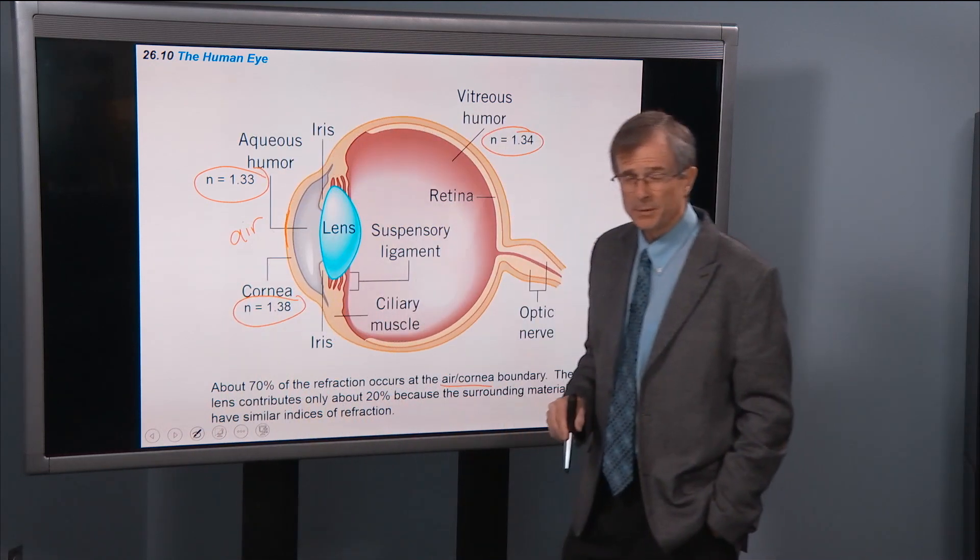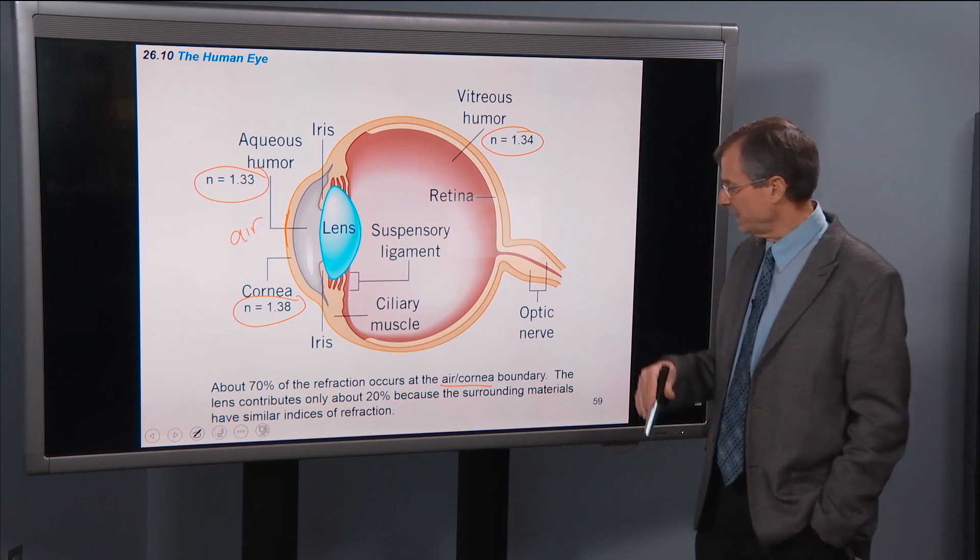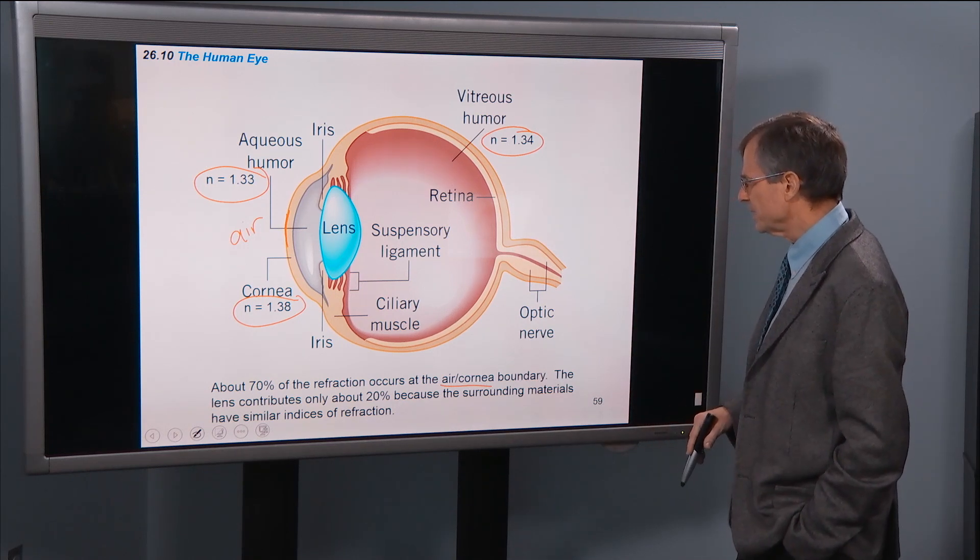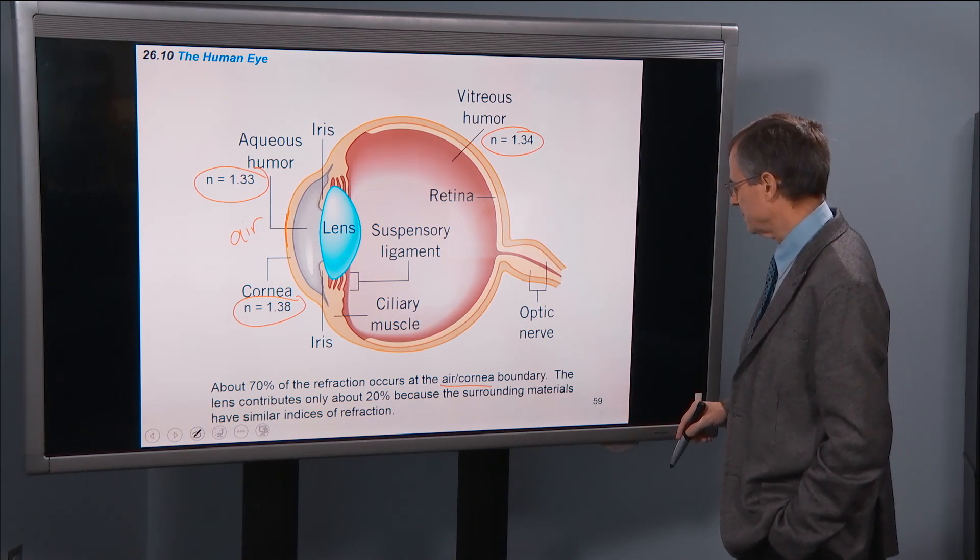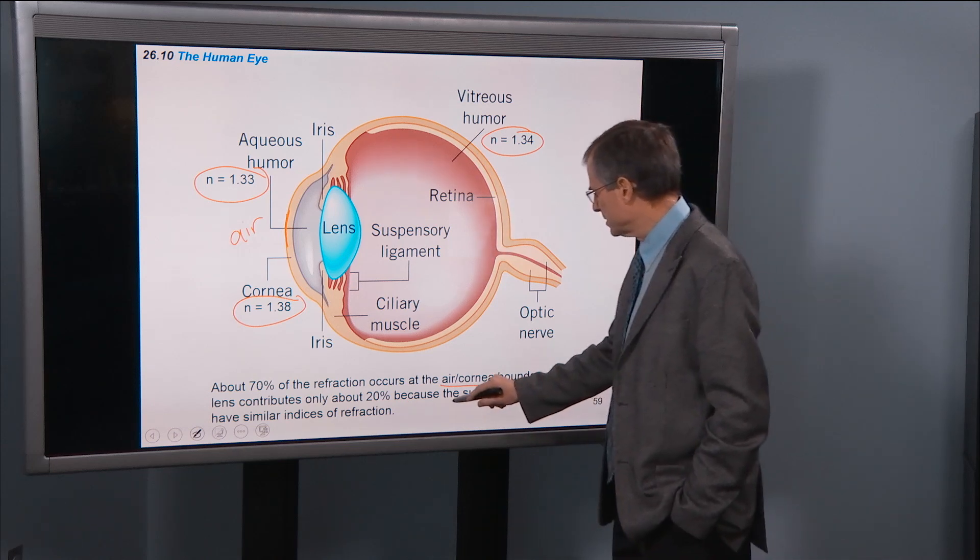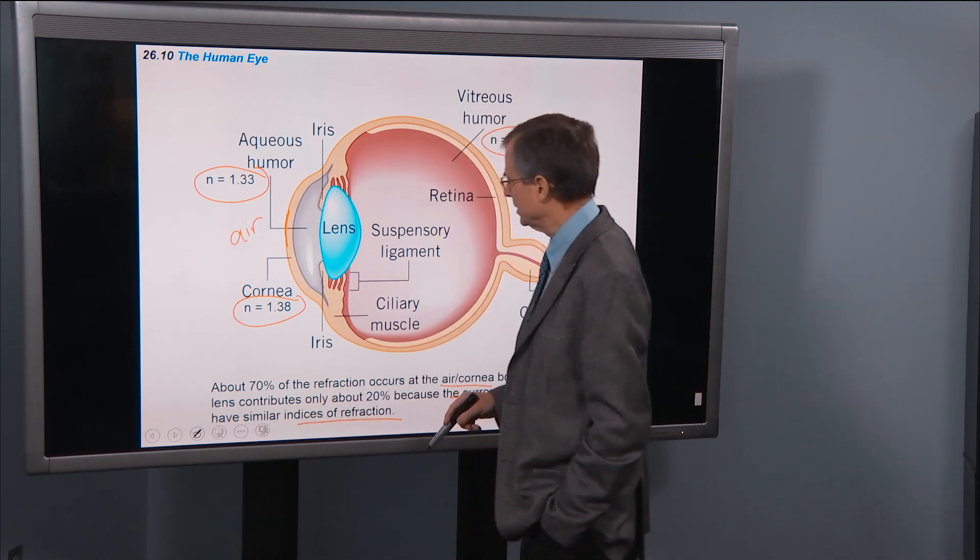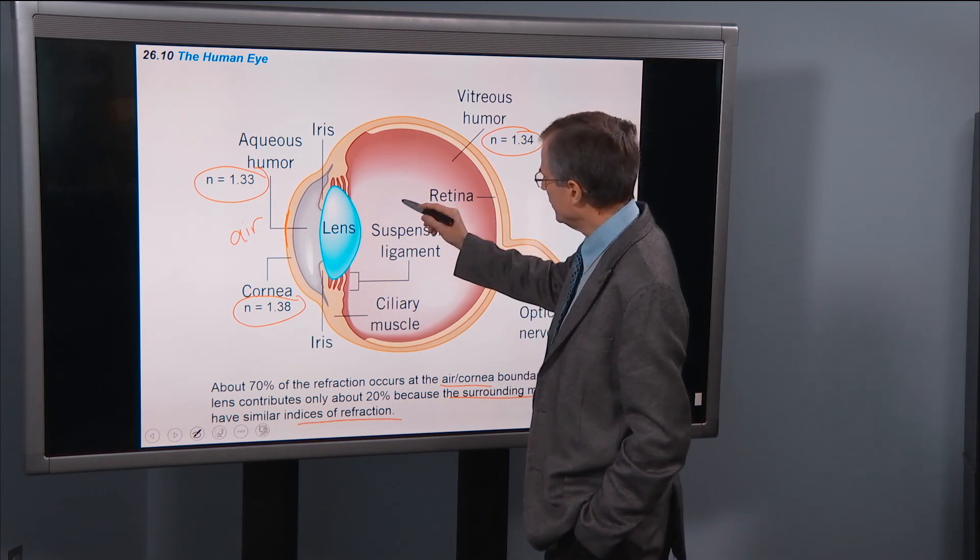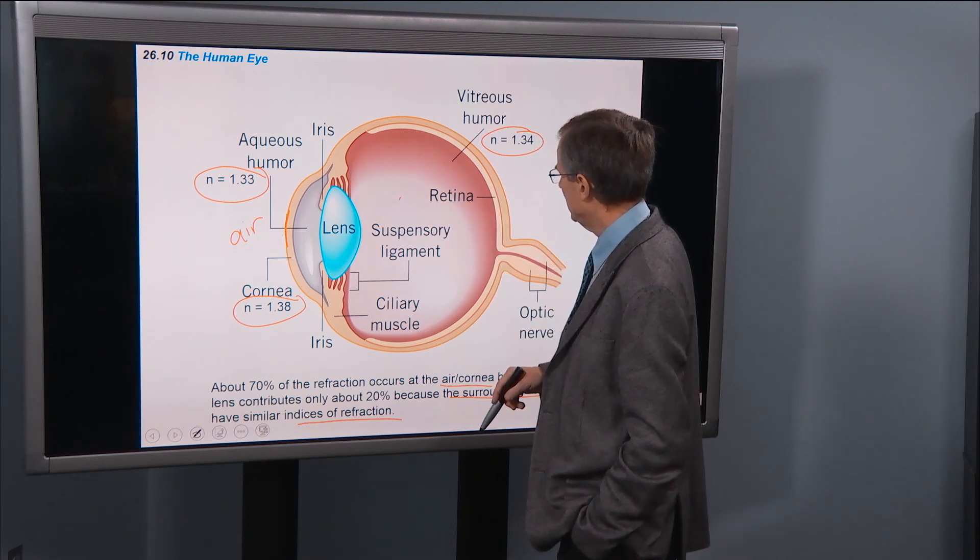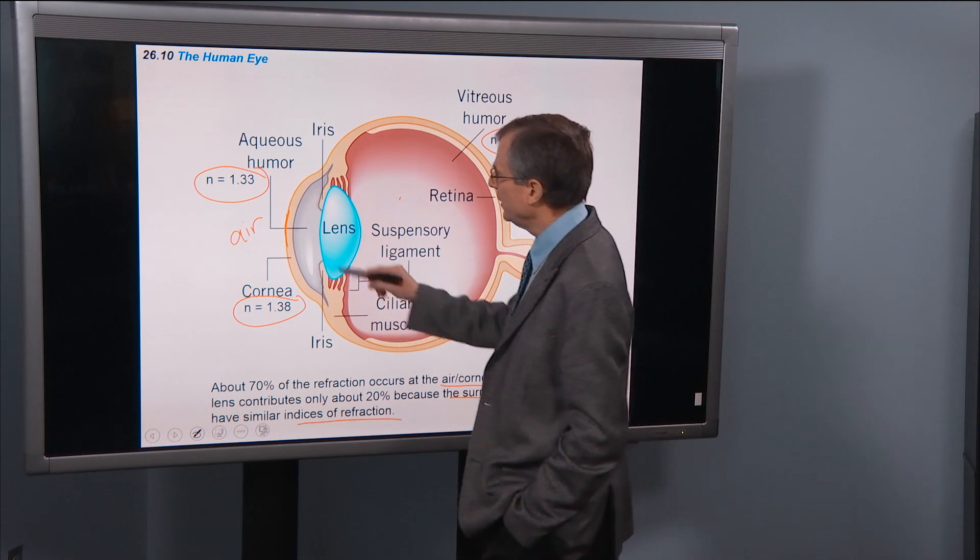That's where most of the refraction or the bending of light occurs. The lens contributes only about 20% because the surrounding materials have similar indices of refraction. So here we've got 1.34 in the vitreous humor. We've got 1.33.